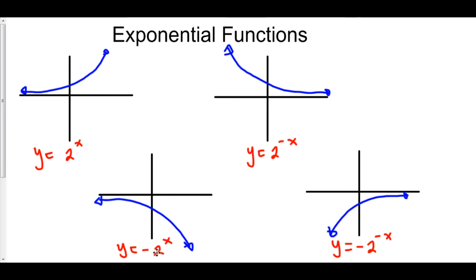Likewise, 2 to the something is always going to be positive, and so when you multiply that by this negative 1 in front, it's always going to be negative. Now, the thing that makes this graph either growing or decaying is the exponent itself. If your exponent is positive, you are growing.